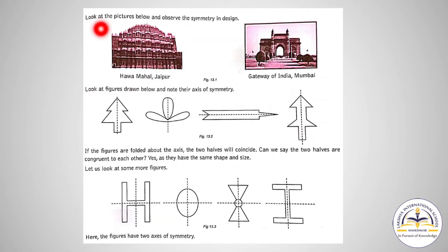Now look at the pictures below and observe the symmetry in design. Hawa Mahal Jaipur, Gateway of India Mumbai—even you can see the Taj Mahal. All these monuments, you can see, are in symmetry. Now you can see the figures drawn below. These are also in symmetry, and this line is called the axis of symmetry.